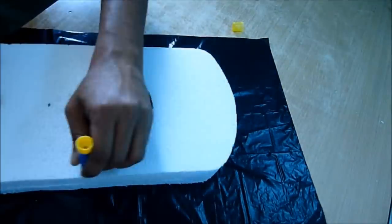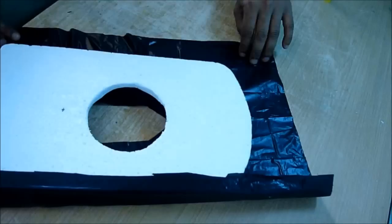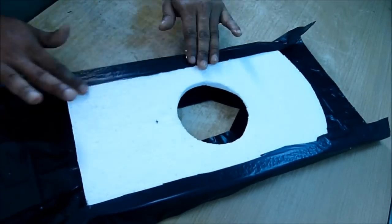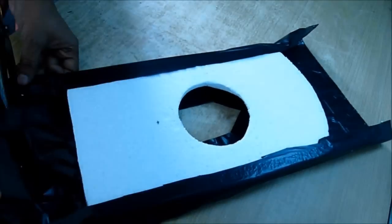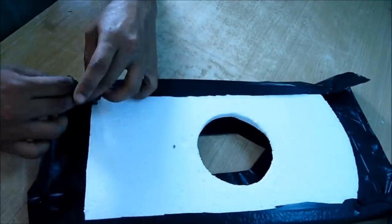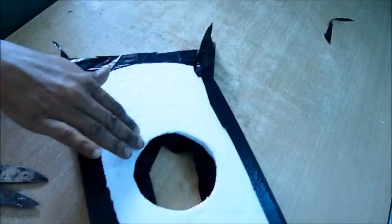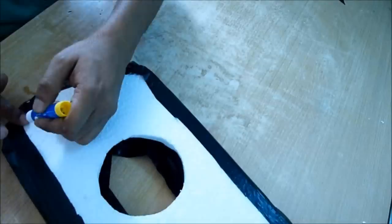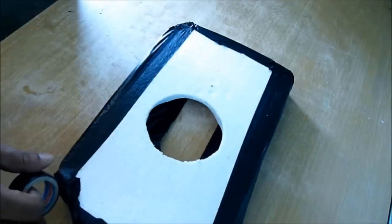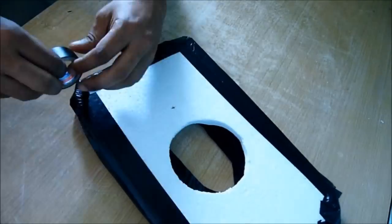Now put the body on top of it and glue all the edges with the body. Glue all the plastic all around and then give a finishing touch using black tape.